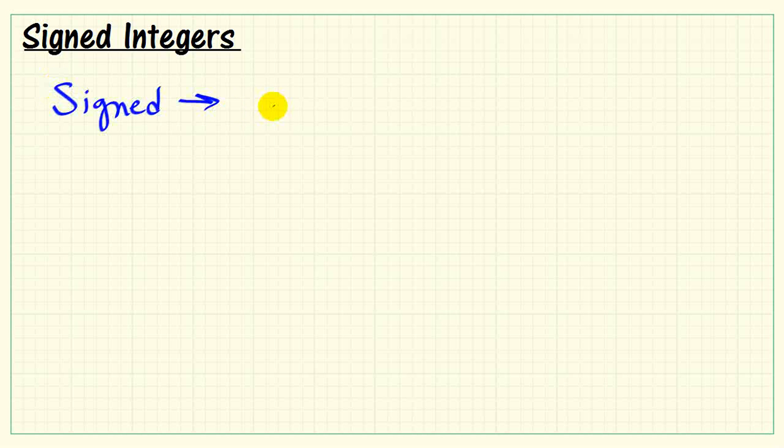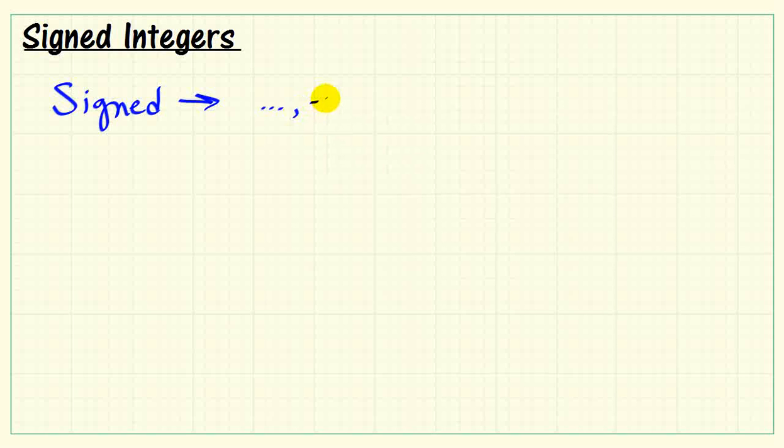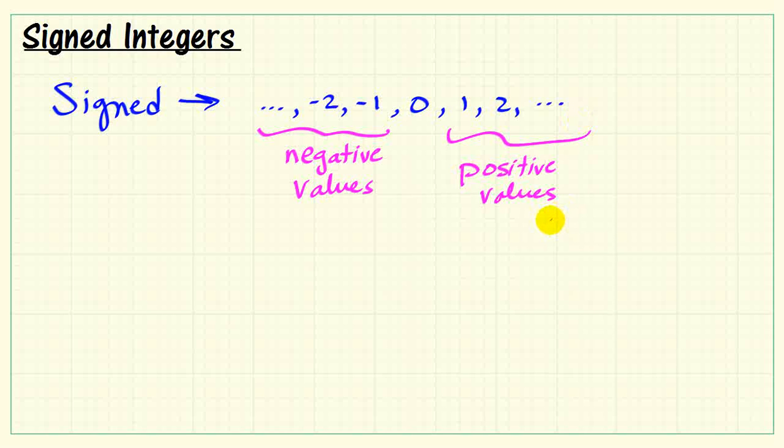Let's review some basic facts about signed integer interpretation of a binary pattern. When we say signed integer, that means we can represent negative values, zero, and positive values. Technically speaking, zero is considered a positive value too.